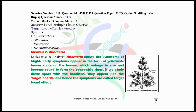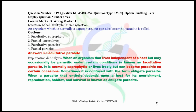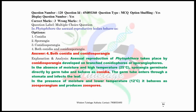Question number 118: Target board effect is caused by Alternaria. The diagram here shows the target board-like patches that appear on infected leaves. Question number 119, the penultimate question of Season 1: An organism which is normally a saprophyte but can also become a parasite is called a facultative parasite. Question number 120, the ultimate question of Season 1: In Phytophthora, the asexual reproductive bodies behave as — the correct answer is option 4, that means both conidia and conidiosporangia.